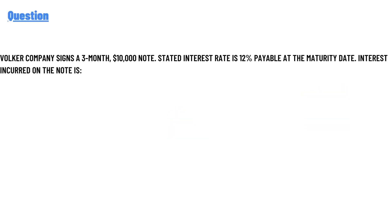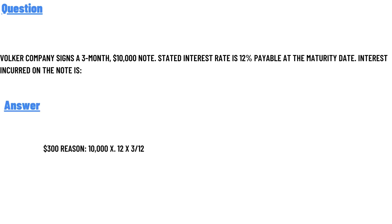Volker company signs a three-month $10,000 note. The stated interest rate is 12%, payable at the maturity date. The interest incurred on the note — the correct answer is $300. The reason: 10,000 multiplied by 12% multiplied by 3 divided by 12, so that is the answer to the question.